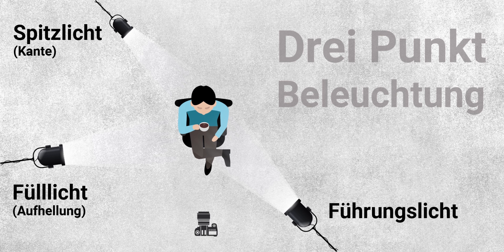Und etwas mehr Plastizität. Das Führungslicht wird normalerweise über Kopf aufgehängt, nach unten strahlend und hier vorne raus in einem 45-Grad-Winkel. Das ist dann quasi eine natürliche Lichtquelle, ähnlich des Sonnenlichts, das irgendwo oben hängt und dann diese natürliche Schattierung auf einem Gesicht zaubert. Also: wir haben Führungslicht, Fülllicht und Spitzlicht, beziehungsweise Kante.